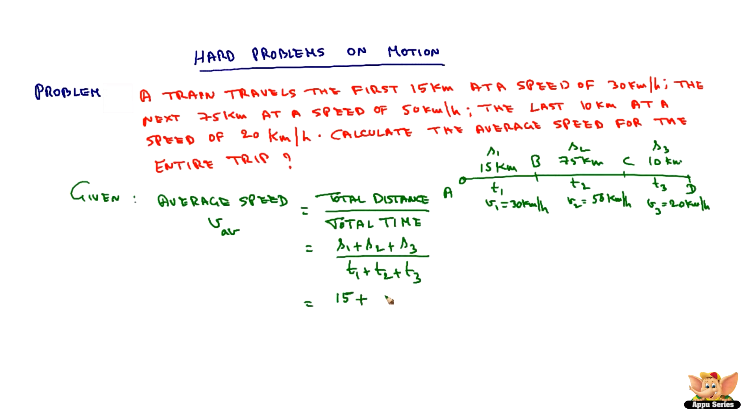S1 in this case is 15, S2 is 75, and S3 is 10. T1, T2, T3 are unknown to us. 100 by T1 plus T2 plus T3 km per hour, let us call it as equation 1.